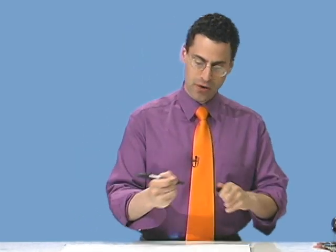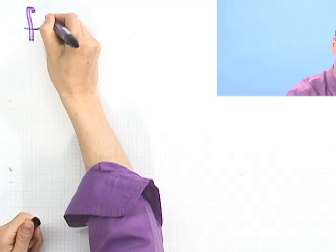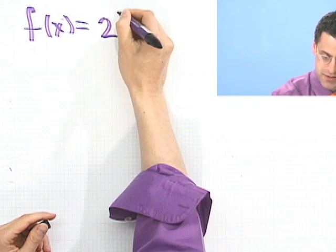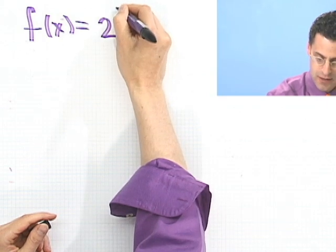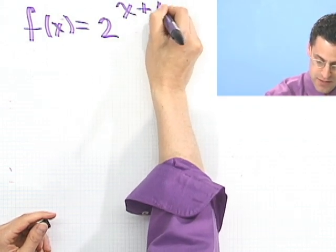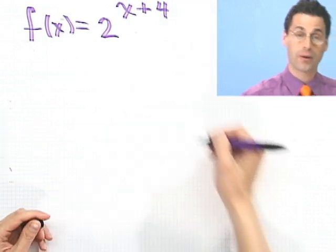Let's try to graph some slightly more exotic exponential functions to get a feel for how the exponential function works and manipulating that object. Let's begin by graphing f of x equals 2 to the x plus 4 power.